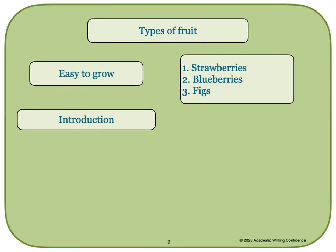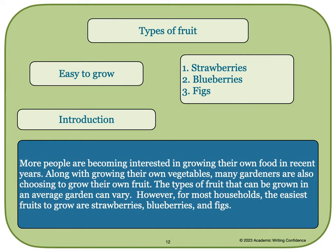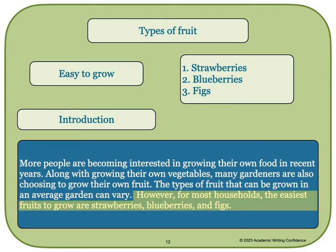In this case, we'll start again with our introduction and write an essay about the types of fruit that are easy to grow. Here is a possible introduction: 'More people are becoming interested in growing their own food in recent years. Along with growing their own vegetables, many gardeners are also choosing to grow their own fruit. The types of fruit that can be grown in an average garden can vary. However, for most households, the easiest fruits to grow are strawberries, blueberries, and figs.' Our thesis statement is clearly stated at the end of the introduction paragraph.